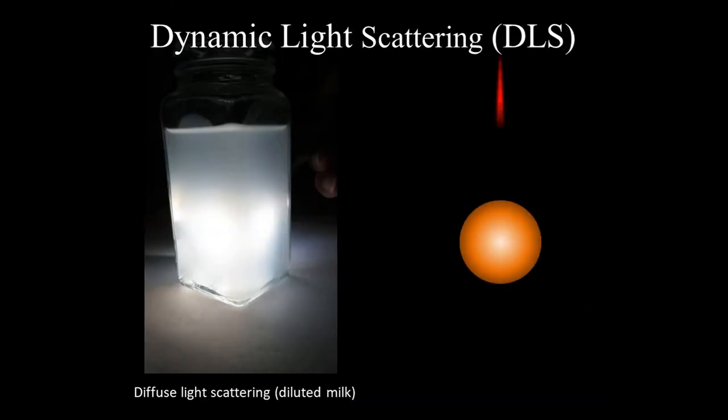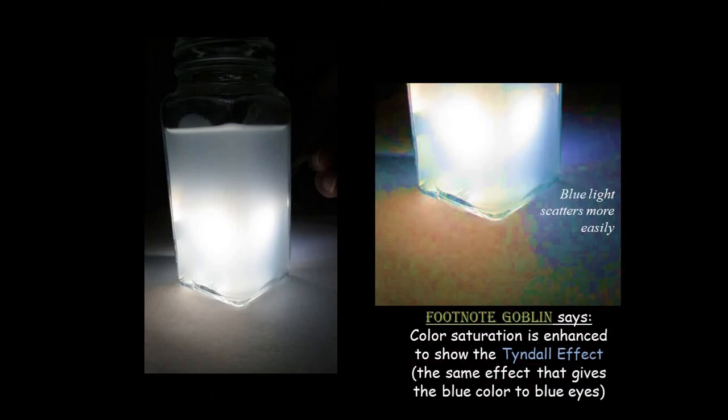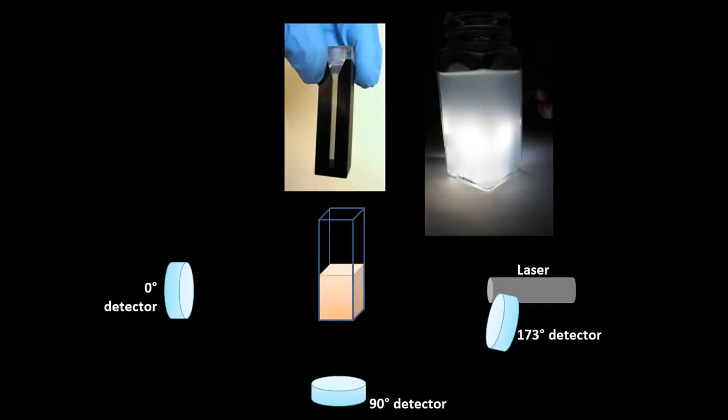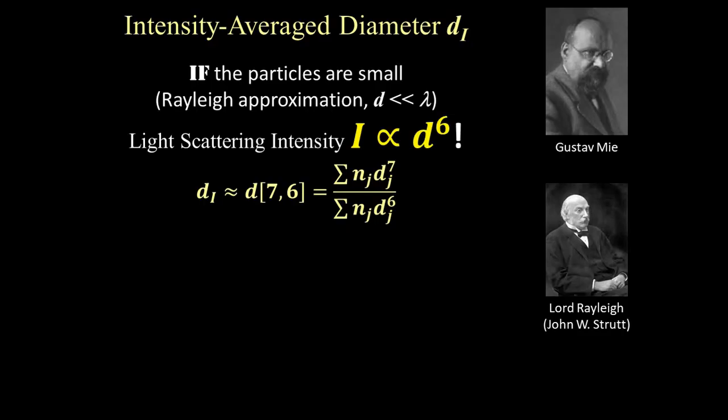Colloidal suspensions are often cloudy or turbid, because light bounces, or scatters, in every direction off of the particles in suspension. In a DLS instrument, a laser beam is fired out of the sample colloidal solution, and the scattered light intensity is detected at certain angles. The intensity of scattered light increases with particle size, according to theories developed by Lord Rayleigh and Gustav Mee.